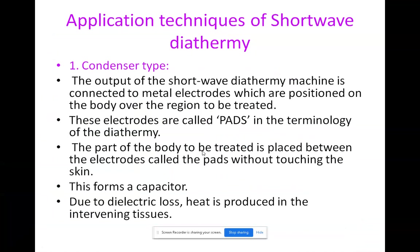Those electrodes will be called 'pads' in diathermy terminology. The part of the body to be treated is placed between the electrodes — the pads — without touching the skin. This forms a capacitor: the electrodes and body tissue act as the capacitor plates, while the skin acts as the dielectric material. Due to losses occurring in the dielectric, heat is produced in the intervening tissues.